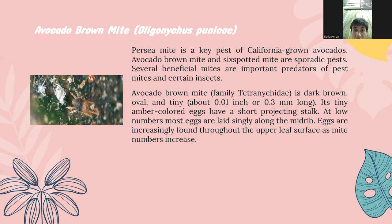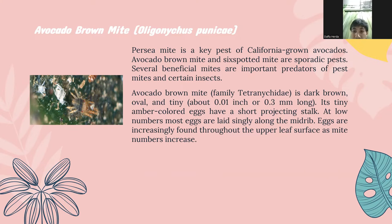Then there is avocado brown mite, or Oligonychus punicae, a key pest of California avocado. Avocado brown mite and six-spotted mite are sporadic pests. Several beneficial mites are important predators of pest mites. Avocado brown mite is dark brown, oval, and tiny — about 0.3 millimeters long. The amber-colored eggs have a short projecting stalk, and most eggs are laid singly along the midrib.